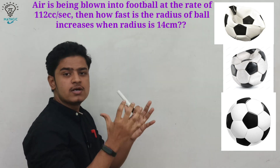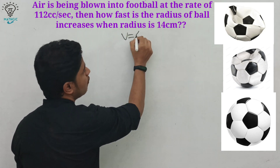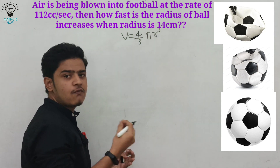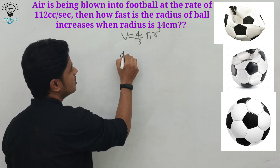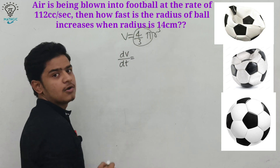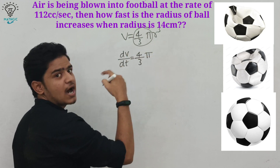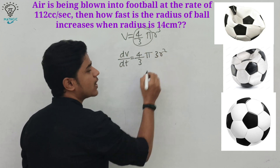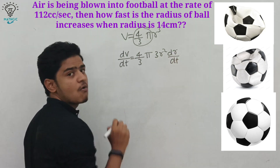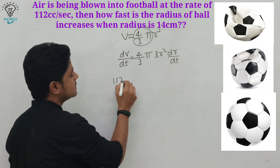The ball is in the shape of a sphere. The volume of a sphere is V = (4/3)πr³, where r is the radius. We need to find the change of radius with respect to time, so we differentiate. The differentiation of V with respect to time gives (4/3)π times 3r² times dr/dt. The rate of volume change is 112 cc per second.